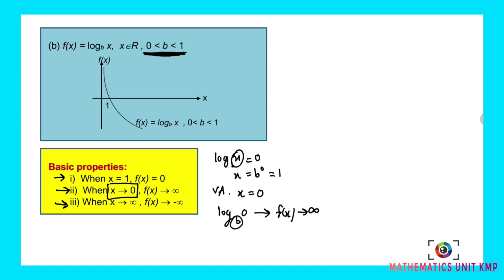The third step: when x is approaching positive infinity, the value of y will be approaching negative infinity. For example, you take log base 0.5 of 1,000,000 — if you calculate it, the value will be too small. So it goes to negative infinity. We can sketch the graph: first step, when x equals 1, plot the point. Second step, vertical asymptote x equals 0. When x is approaching 0, f(x) goes upward to the left. When x is approaching positive infinity, f(x) goes downward.